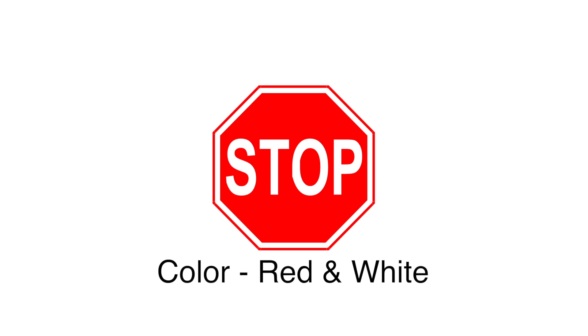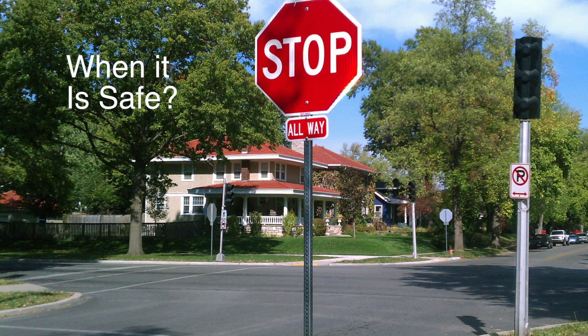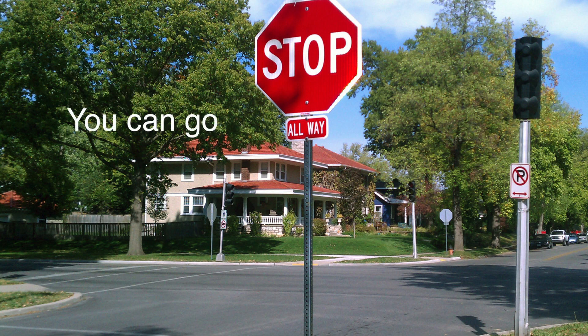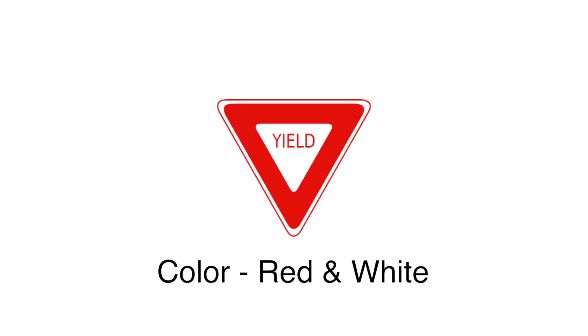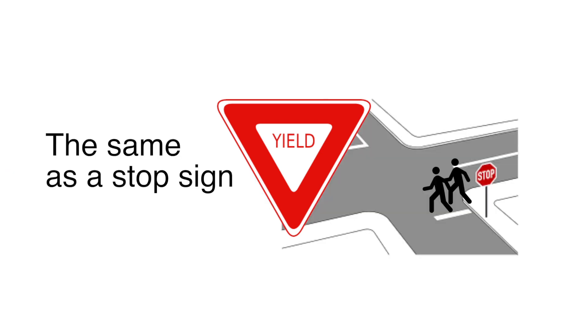Stop — Octagon. This sign means you must come to a complete stop. Yield to pedestrians and other vehicles. When it is safe, you may enter the intersection. Yield — Triangle. This sign means you should reduce speed and yield right-of-way. If needed, stop the same as you would for a stop sign.